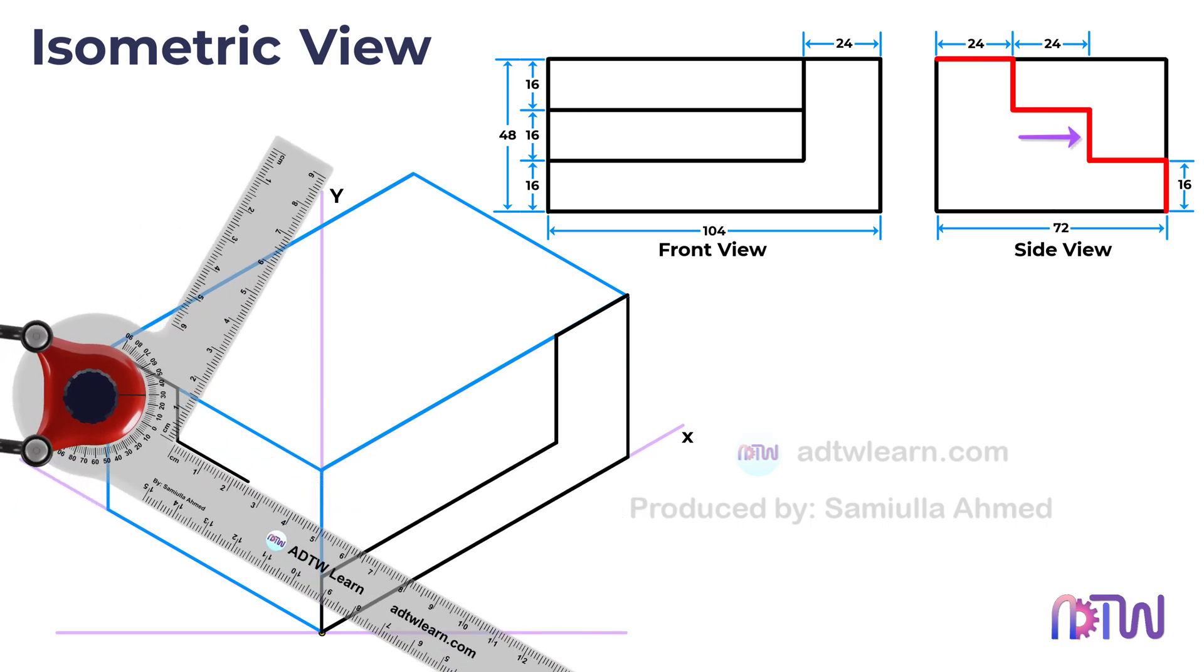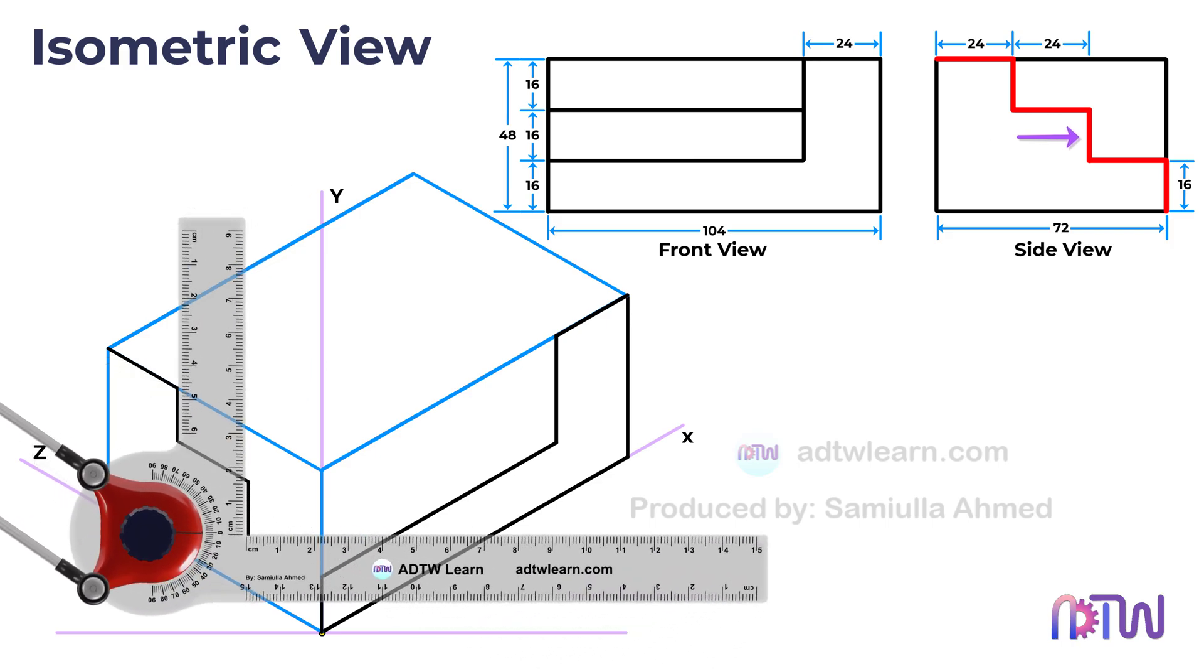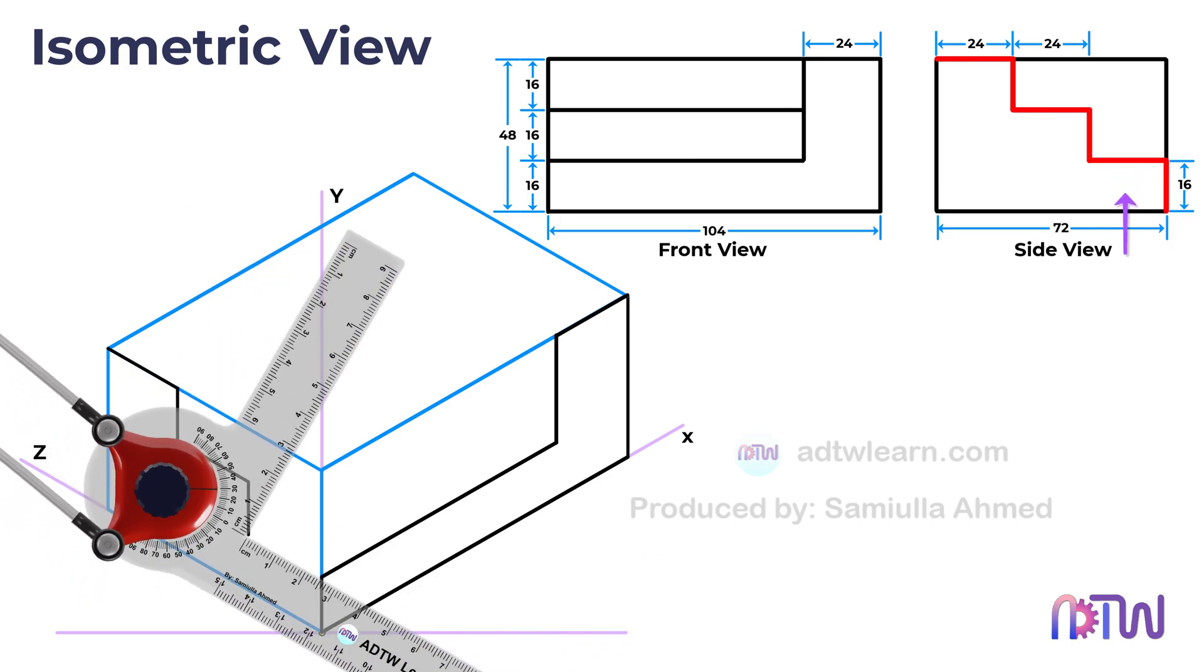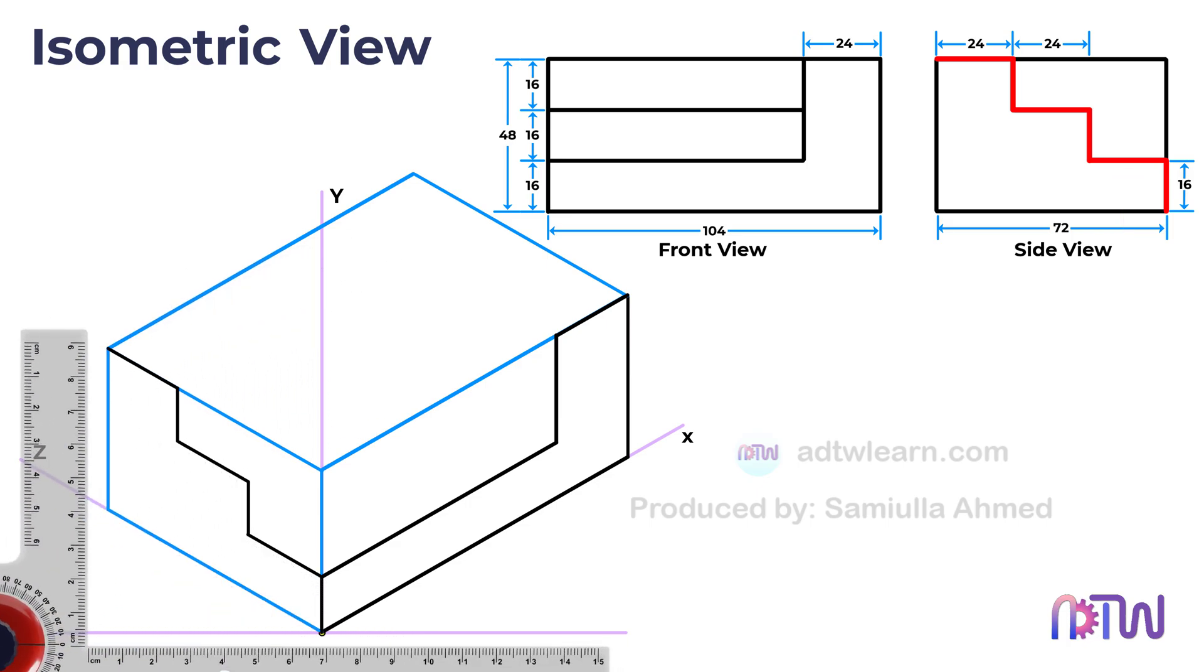Draw another vertical line of 16 mm, and finally, a line of 24 mm parallel to the Z axis. This completes the side view of the object in the YZ plane.